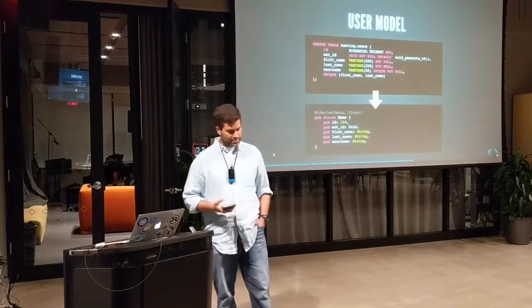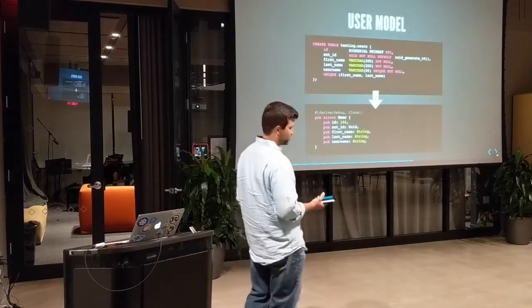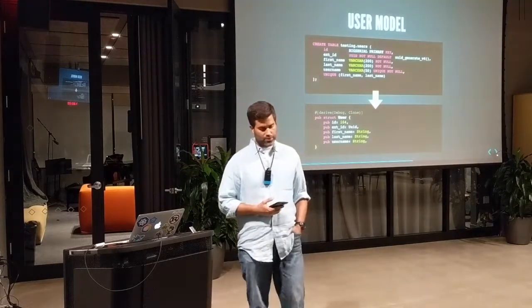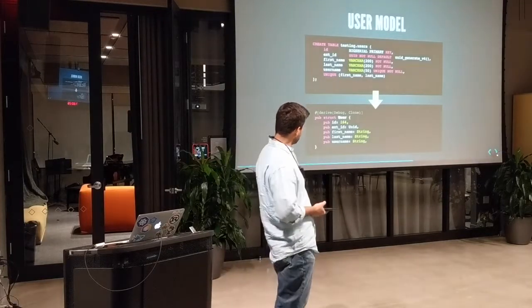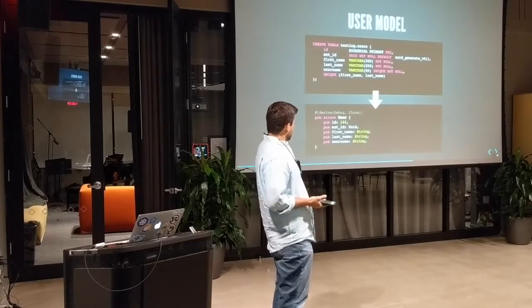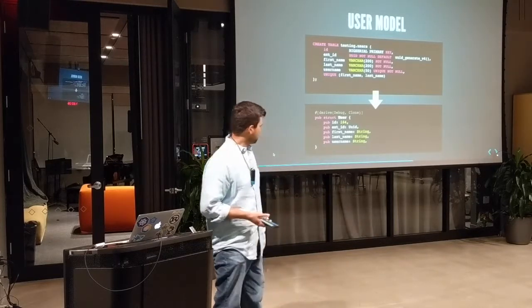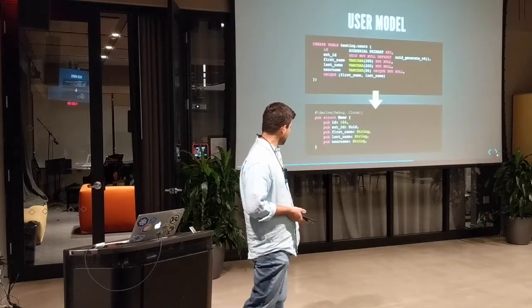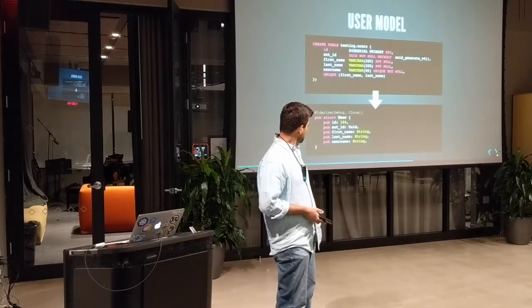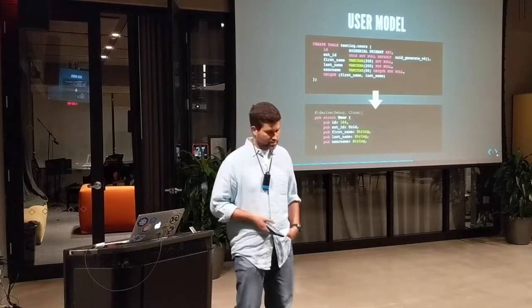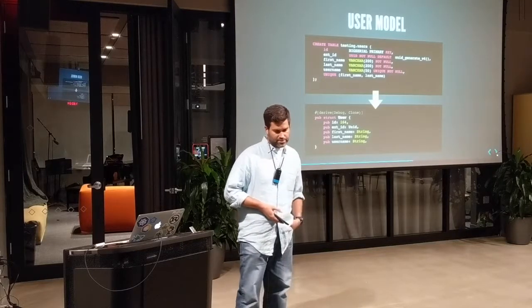Presented here at the top is the SQL representation of our users table. It's straightforward — it has an internal identifier and an external identifier, plus names. What I want to show is how this maps to Rust types. Below is what your user model would look like. A big serial, or bigint, maps to i64. A UUID maps to a UUID type in Rust. And a varchar maps to String.